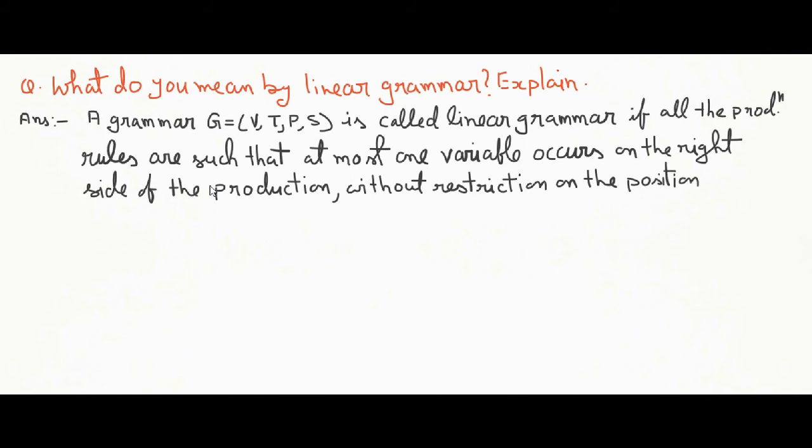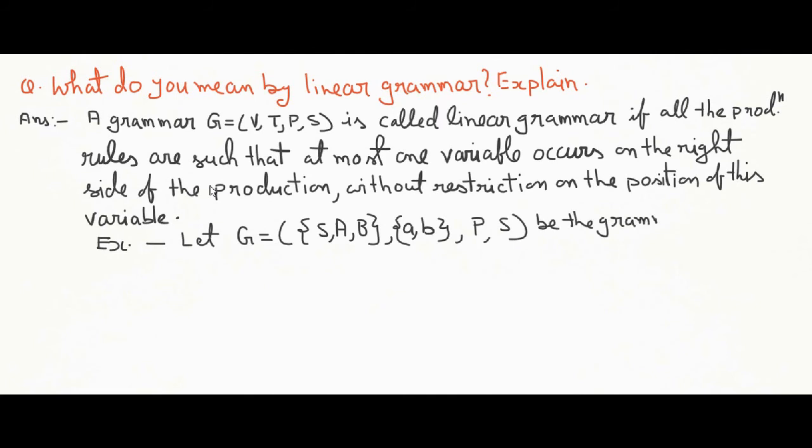So we will examine one example of linear grammar. Let us consider G equals VTPS where variable consists of S, A, B. Terminal symbols are a and b. P is the production rule and S is the start symbol with the grammar and productions are as written here.